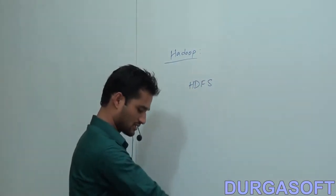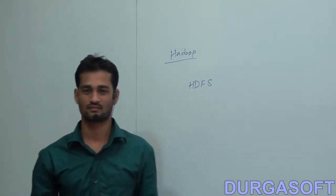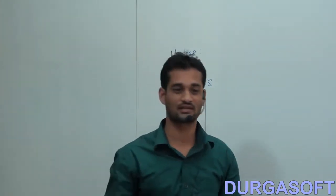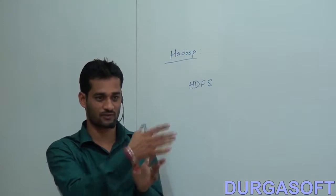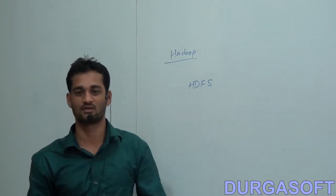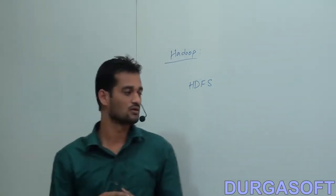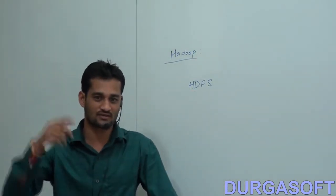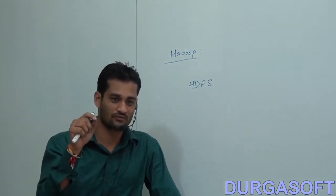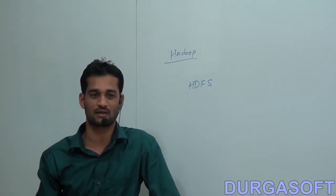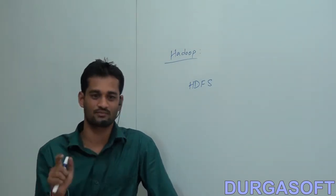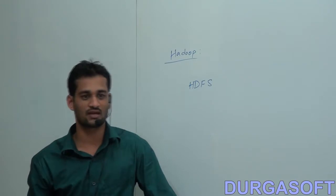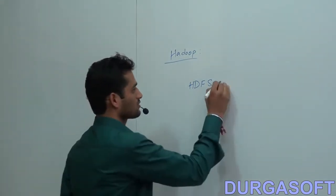HDFS stands for Hadoop Distributed File System. If someone asks what HDFS is, explain that Hadoop is there for storing and processing your data, and HDFS is specifically there for storing your data. HDFS is a specially designed file system for storing huge data sets with a cluster of commodity hardware and with a streaming access pattern.